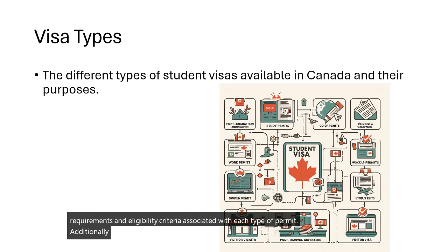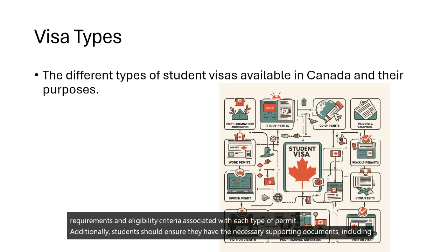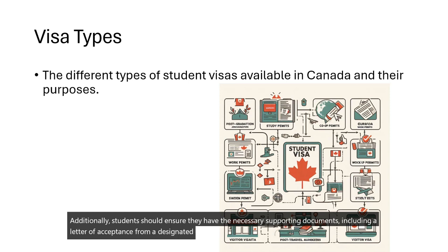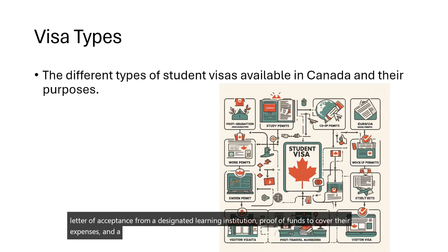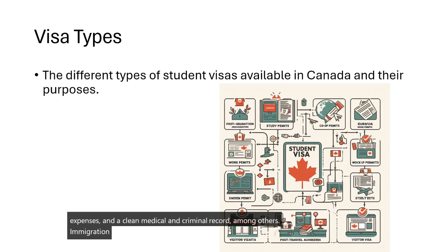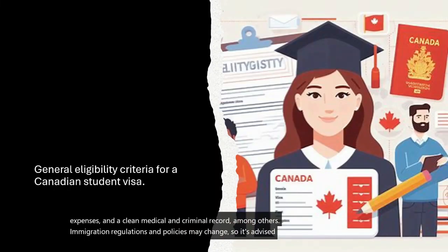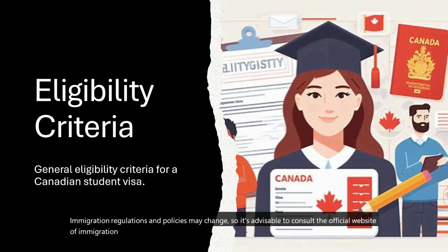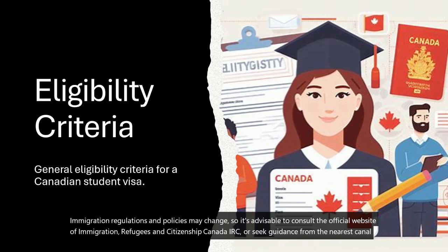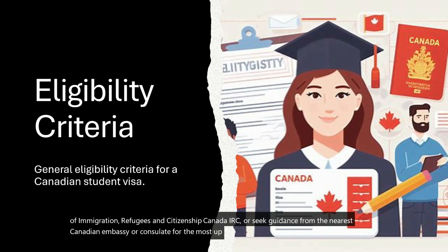Students should ensure they have the necessary supporting documents, including a letter of acceptance from a designated learning institution, proof of funds to cover their expenses, and a clean medical and criminal record, among others. Immigration regulations and policies may change, so it's advisable to consult the official website of Immigration, Refugees, and Citizenship Canada (IRCC), or seek guidance from the nearest Canadian embassy or consulate for the most up-to-date information.